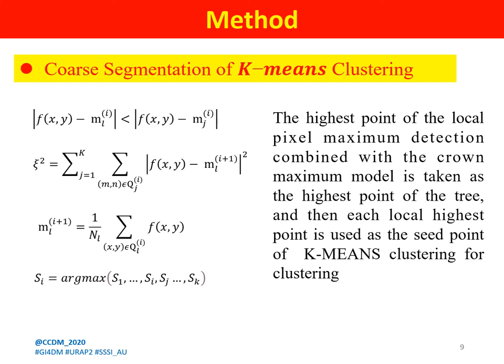The highest point of the local pixel maximum direction, combined with the crown height model, is taken as the highest point of the tree. Each local highest point is used as the seed point of K-means clustering. Step 1: the first clustering center represents the pixels as the tree top detected by the variable window. Step 2: for each point, find the closest clustering center according to a given criterion and assign it to the cluster of that type. Step 3: update the new clustering center obtained in step 2. Step 4: when the cluster center no longer changes, the iteration is terminated.